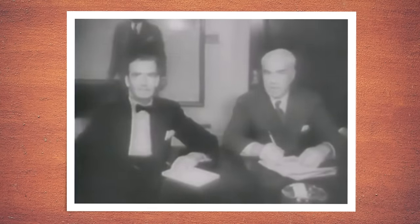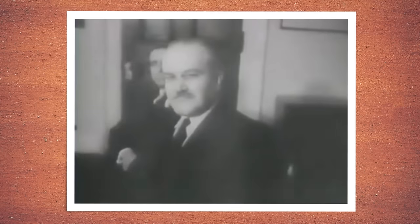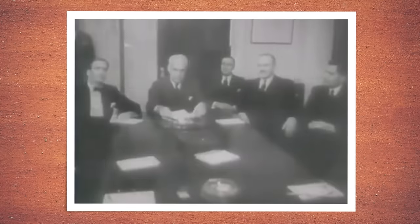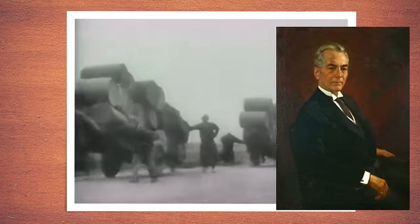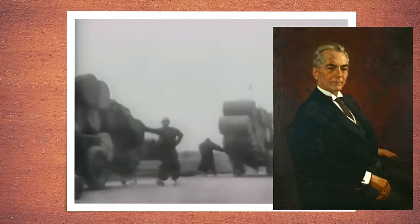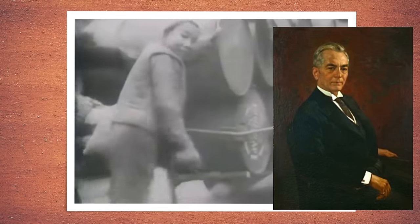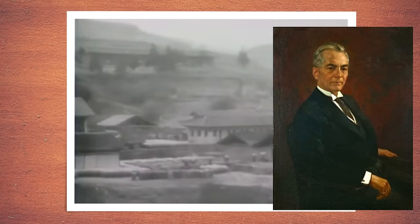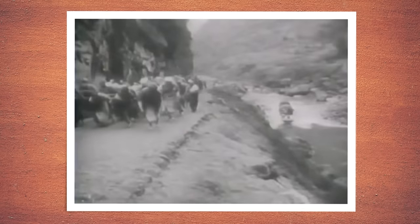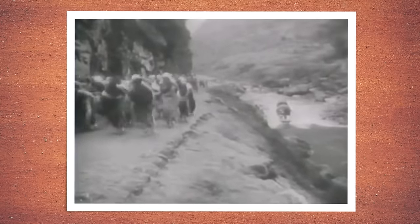Following the passage of the Philippine Independence Act in 1934, a Philippine presidential election was held in 1935. Manuel L. Quezon was elected and inaugurated as the second president of the Philippines on November 15, 1935. The Insular Government was dissolved and the Commonwealth of the Philippines, intended to be a transitional government in preparation for the country's full achievement of independence in 1946, was brought into existence.